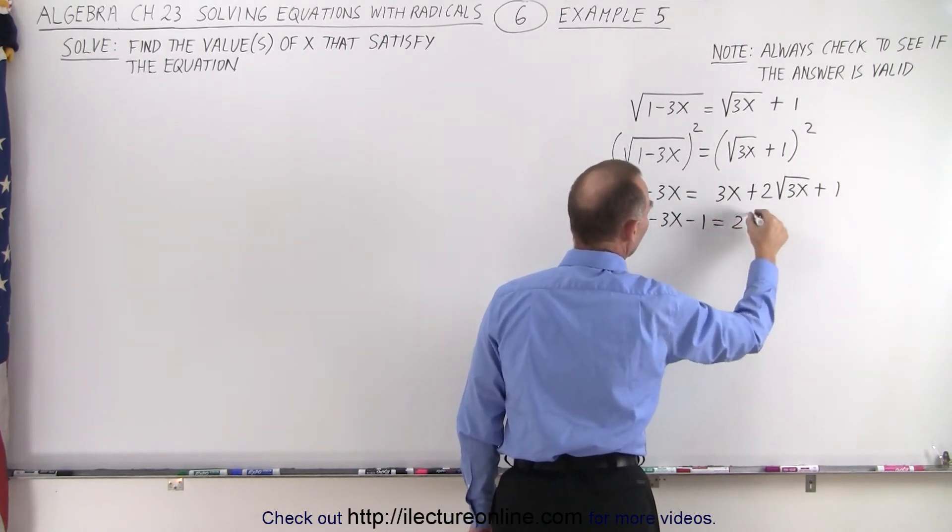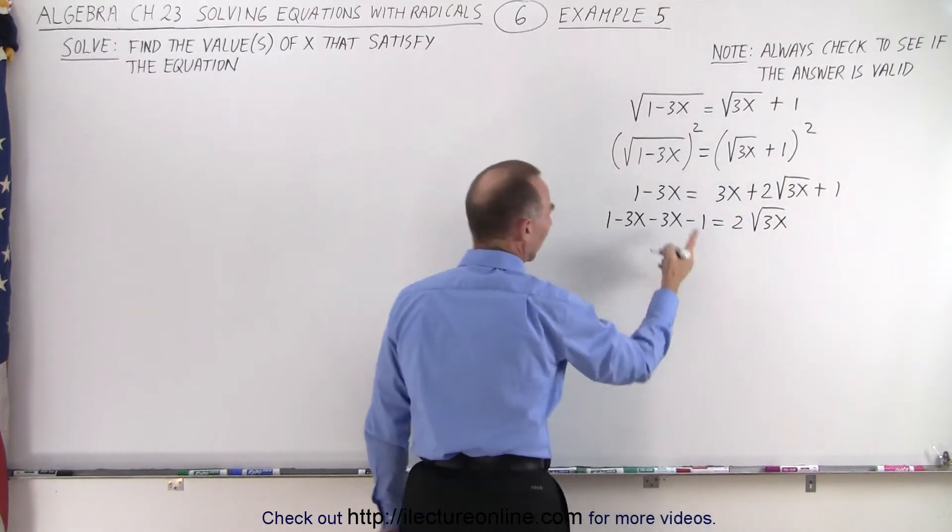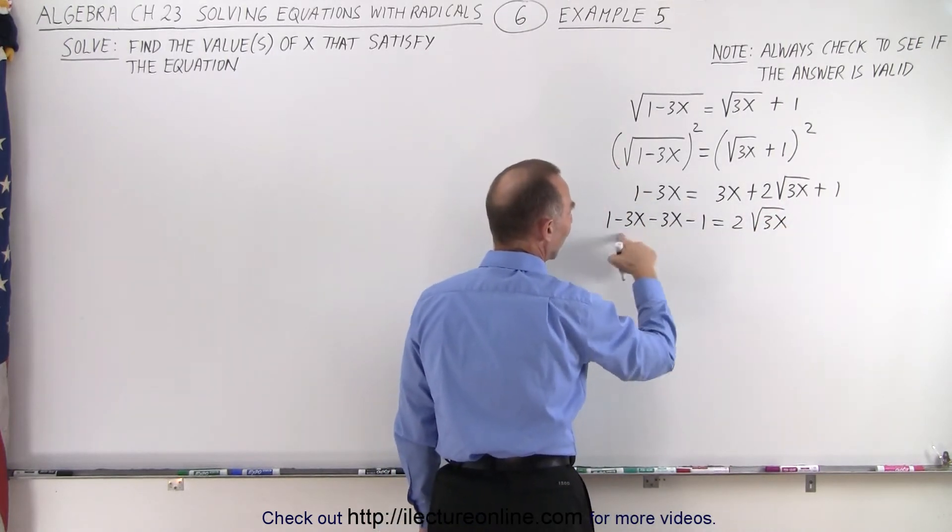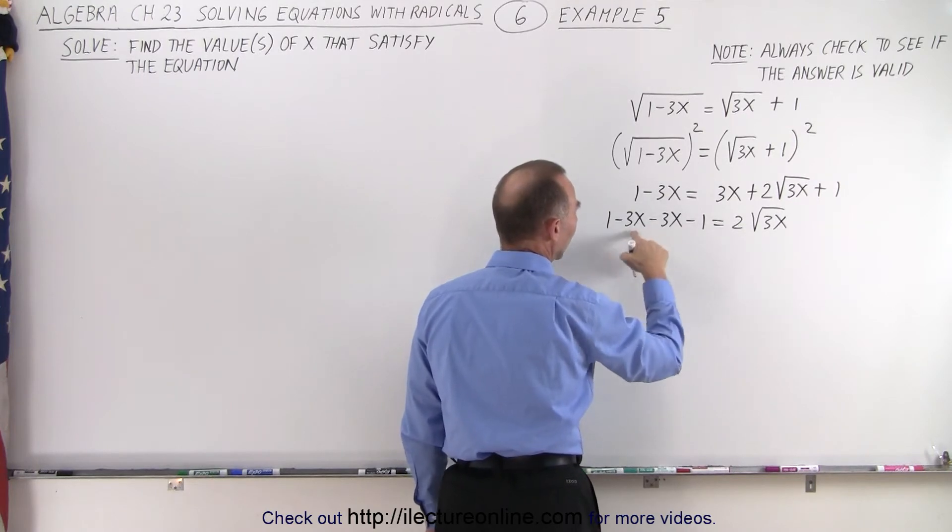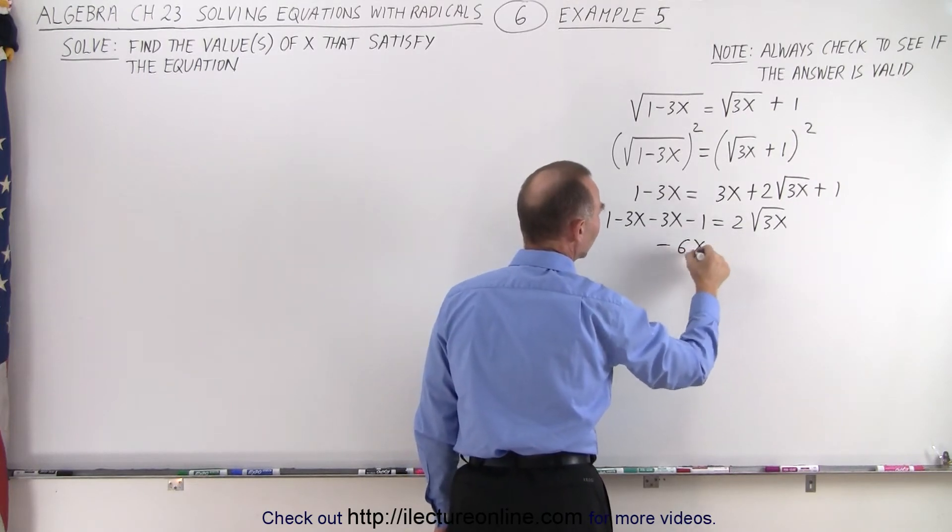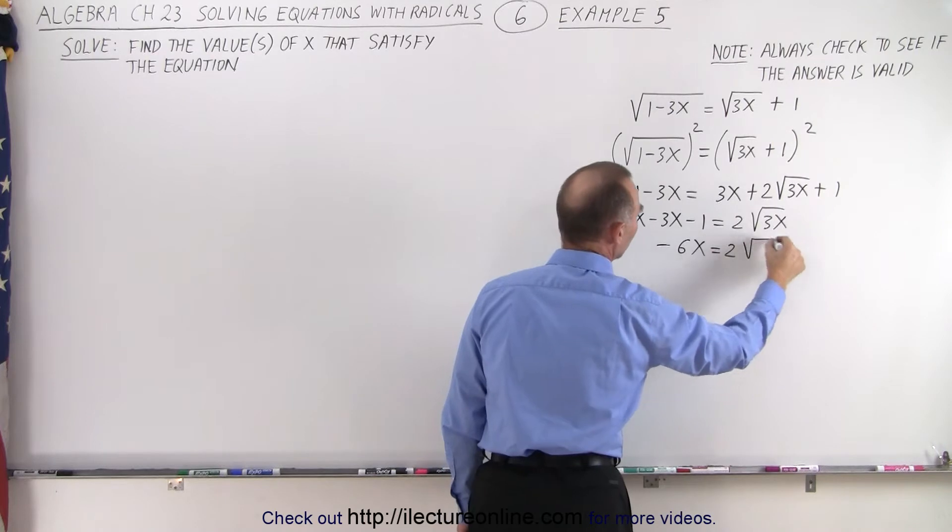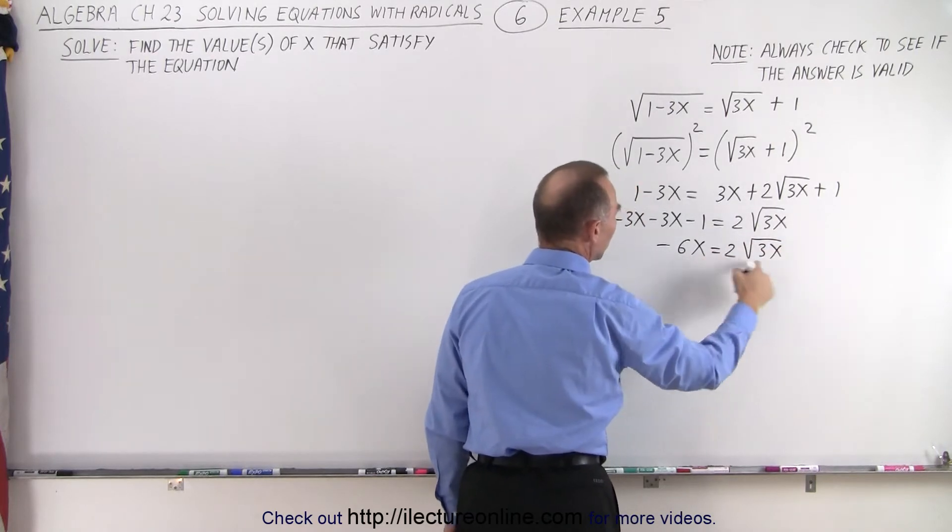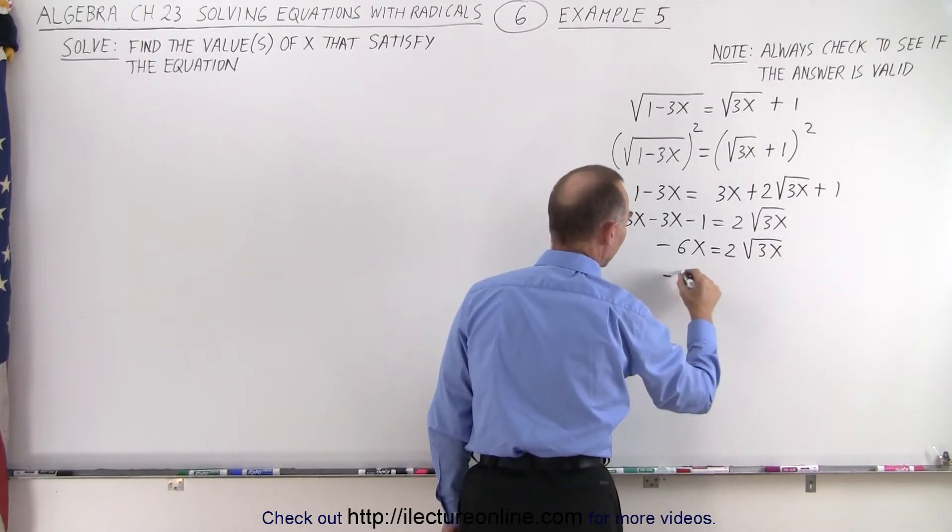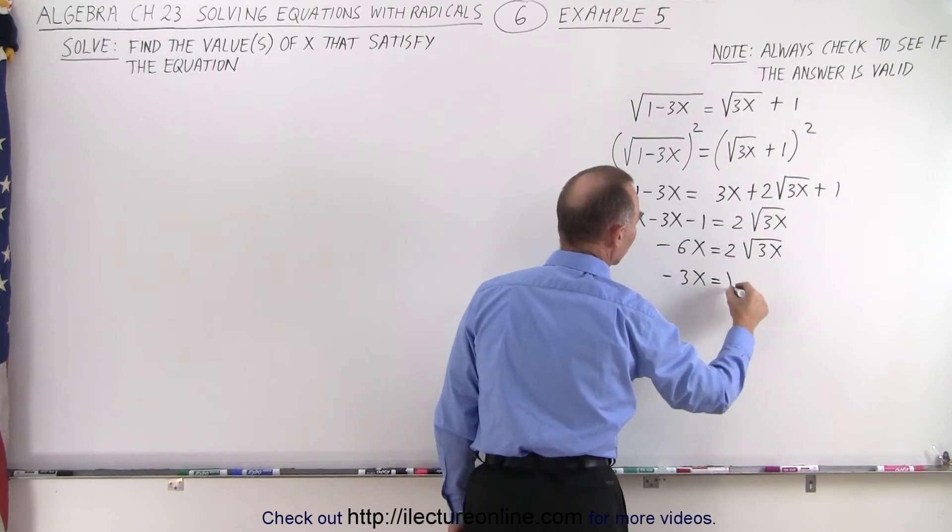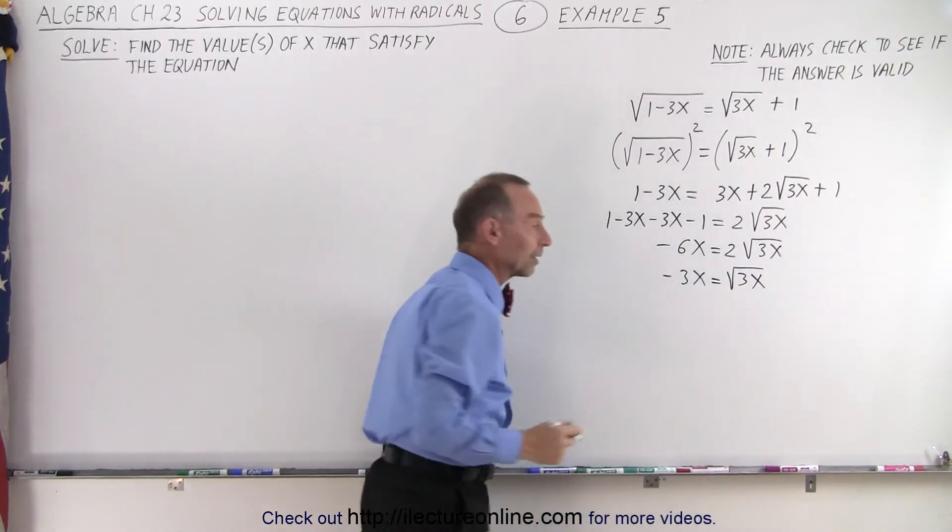This equals 2 times the square root of 3x. Now, combining these, notice the 1s cancel. 1 minus 1 is 0, and this becomes minus 6x is equal to 2 times the square root of 3x. And then when we divide both sides by 2, we get minus 3x is equal to the square root of 3x.